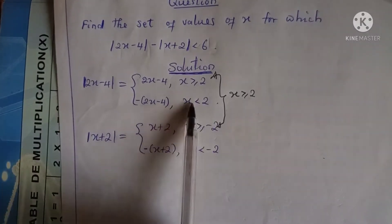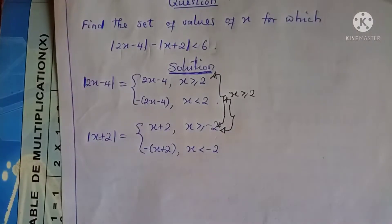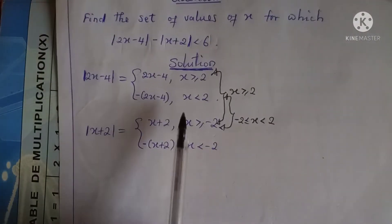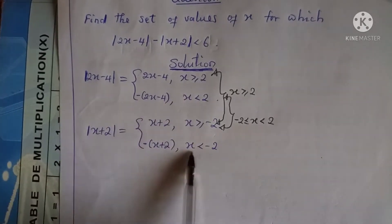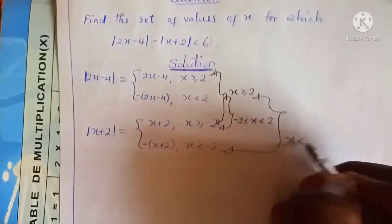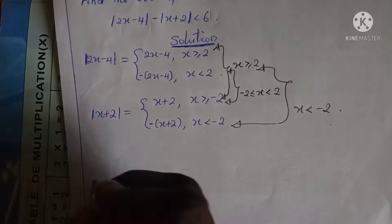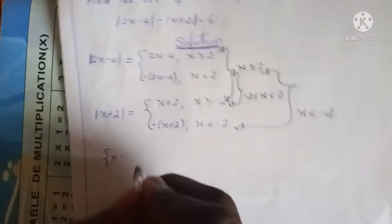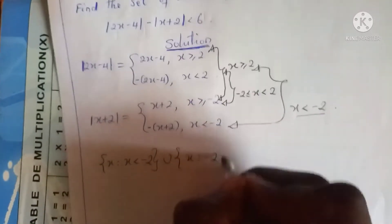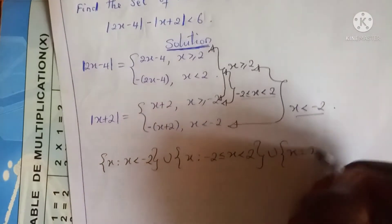Now let's look at the branches x less than 2 and x greater than or equal to negative 2. The intersection here will be the interval negative 2 less than or equal to x which is less than 2. Then looking at the last pair of branches, you are going to obtain the set x less than negative 2. So we can partition the set of real numbers into three: the set where x is less than negative 2, union the set where negative 2 is less than or equal to x which is less than 2, union the set where x is greater than or equal to 2.